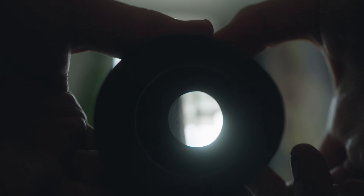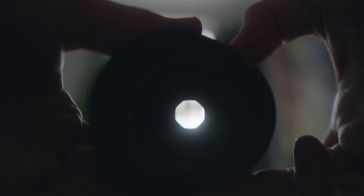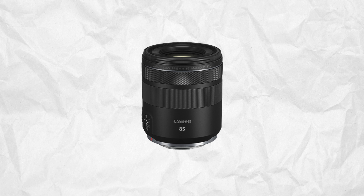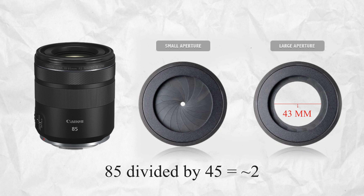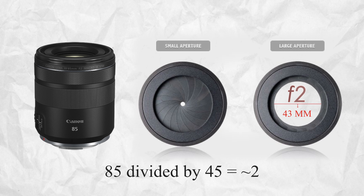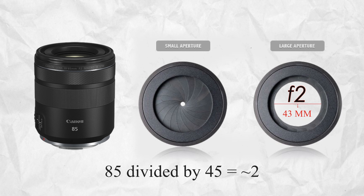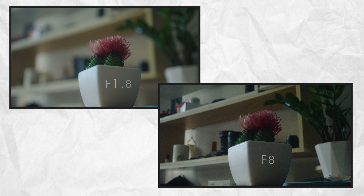In layman's terms, an F-stop number basically tells us how wide the aperture can open relative to the lens's focal length. So an 85mm lens with a max aperture diameter of 43mm comes out to an F-stop number of around F2. Knowing how wide this hole opens up is important because it gives us a general sense of how much we'll be able to throw the background out of focus to create a shallow depth of field.